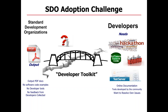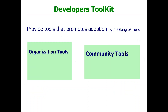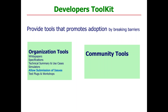Initially we went for the concept of the developer toolkit, which at a very high level is split into two sides. On one side, the organization develops tools consciously intended to be consumed by developers: white papers, specifications made easy to consume in HTML instead of PDF, technical summaries, use cases, and simulators. We allow developers to submit problems directly from the internet into our organization, and we provide test events and workshops.